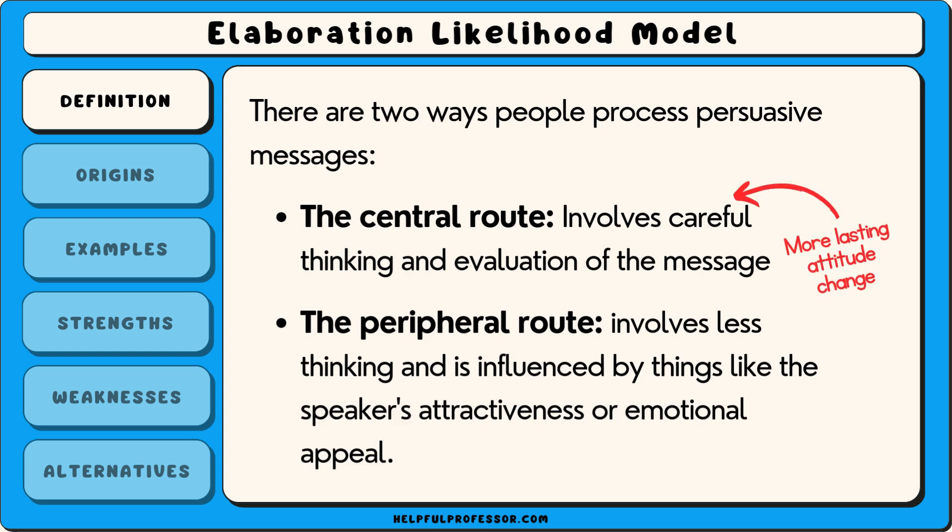The peripheral route involves less thinking and is influenced by things like the speaker's attractiveness or emotional appeal. The central route leads to more lasting attitude change because people engage deeply with the message, while the peripheral route can cause quicker but often temporary changes.